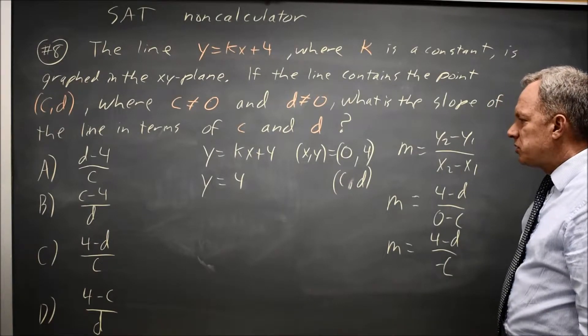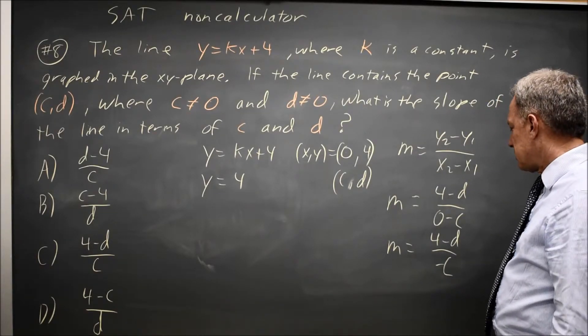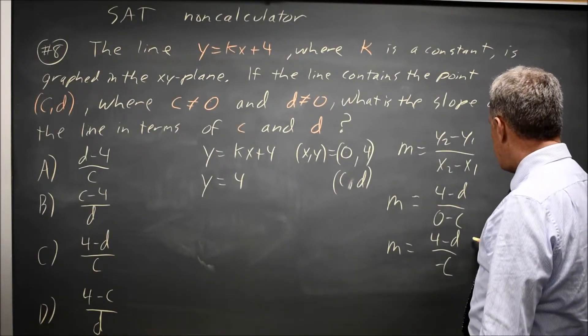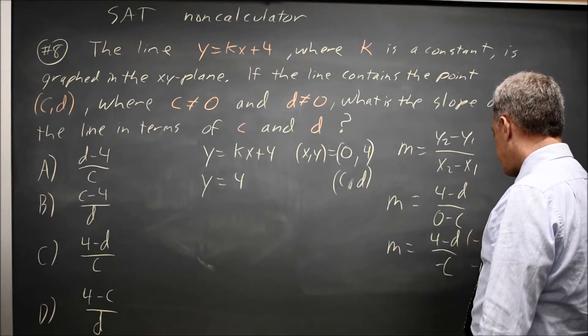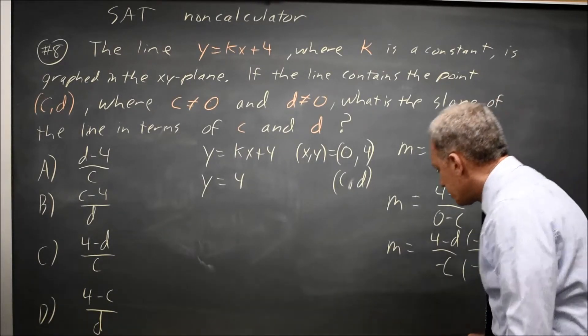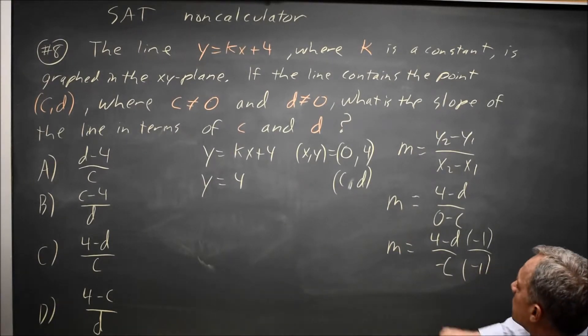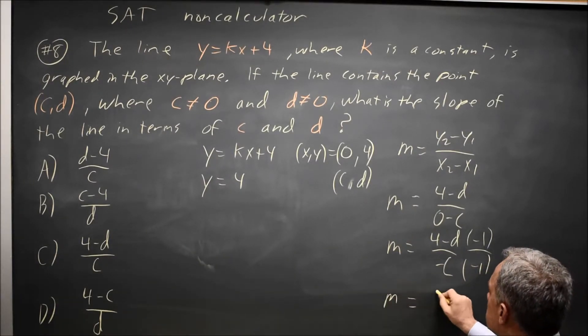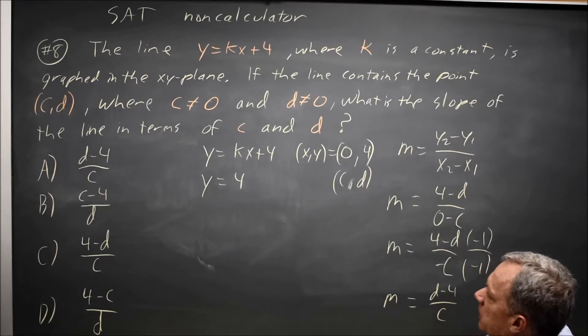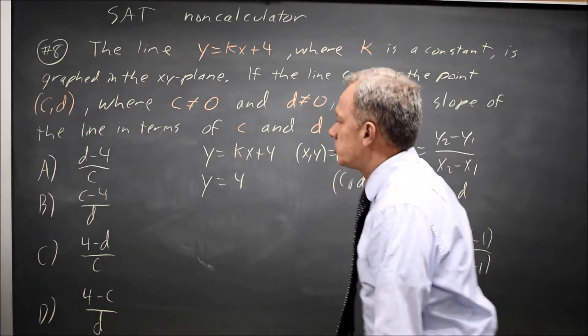Which does not match any of my choices. But if I multiply it by negative 1 over itself, which anything over itself is 1, then I get it rearranged as the slope is d minus 4 over positive c. And that does match choice A.